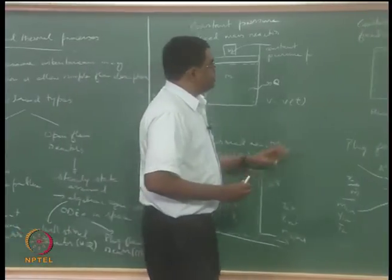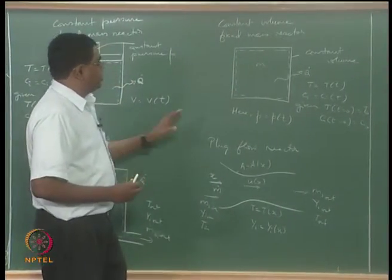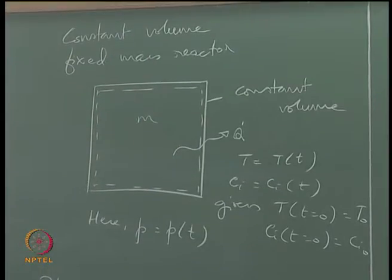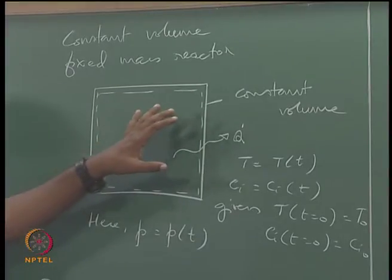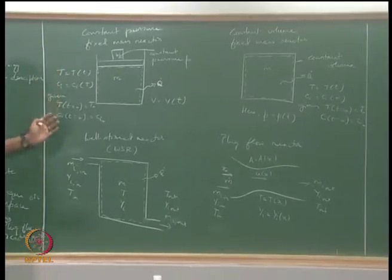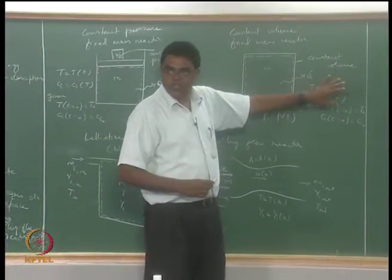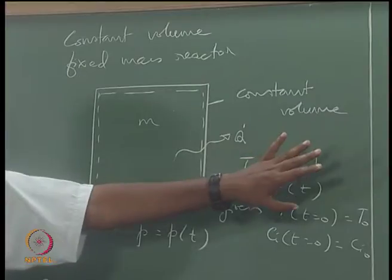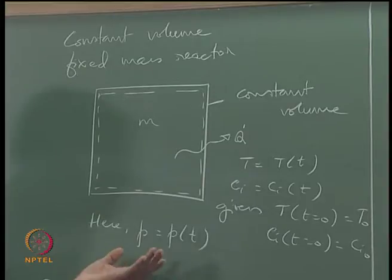In a constant volume fixed mass reactor, you have a box — no piston that moves back and forth to maintain constant pressure. The volume is fixed, so the pressure is obviously going to change in time. The ODE set is similar to the constant pressure case, except the equations change because you are keeping the volume fixed rather than the pressure fixed. As an offshoot, you can also find out how the pressure changes in time.